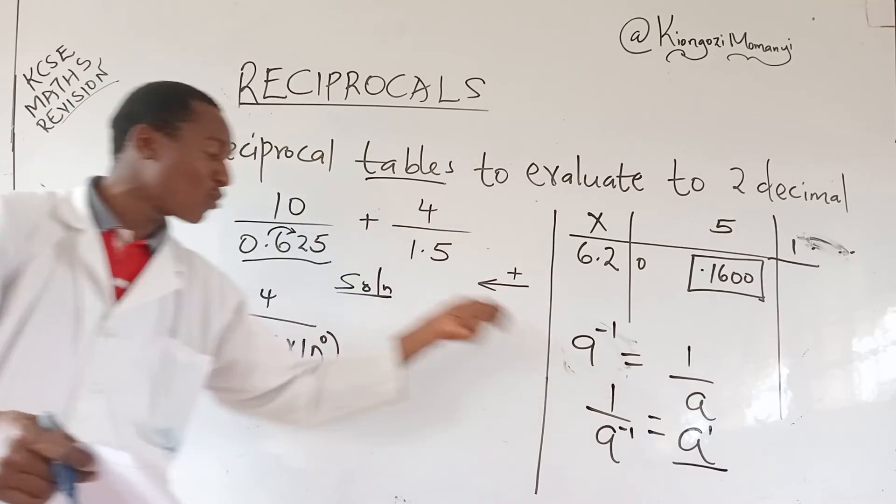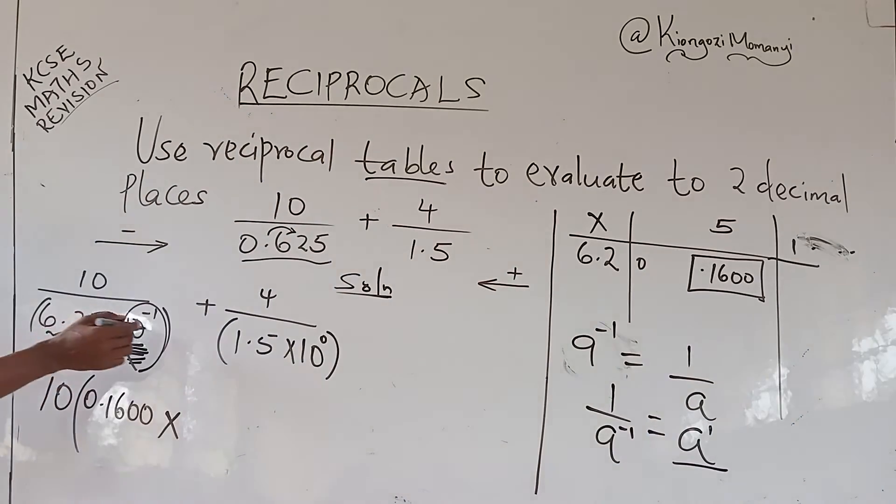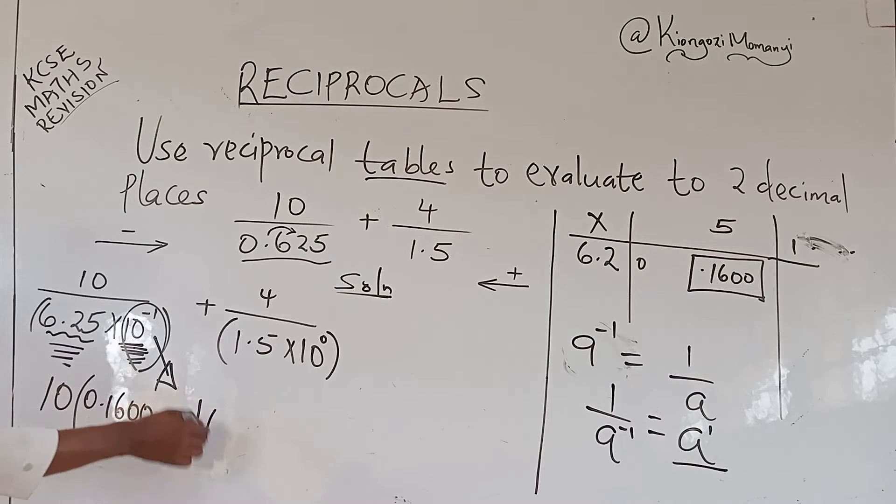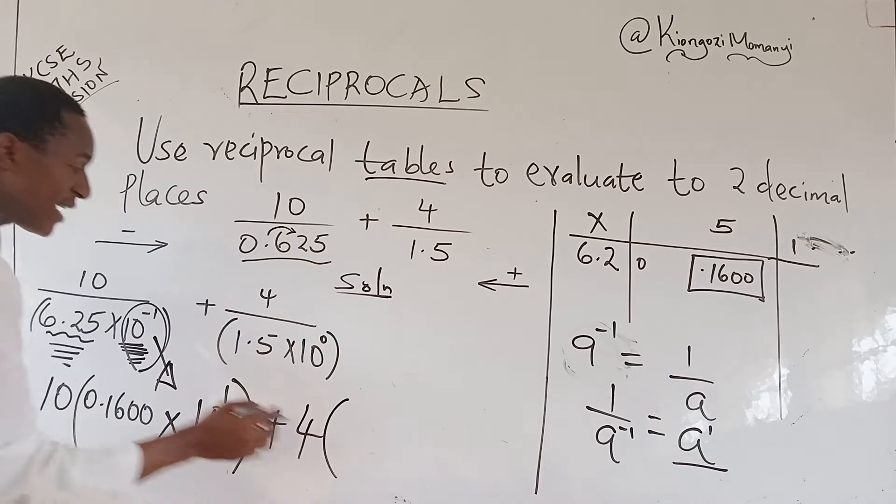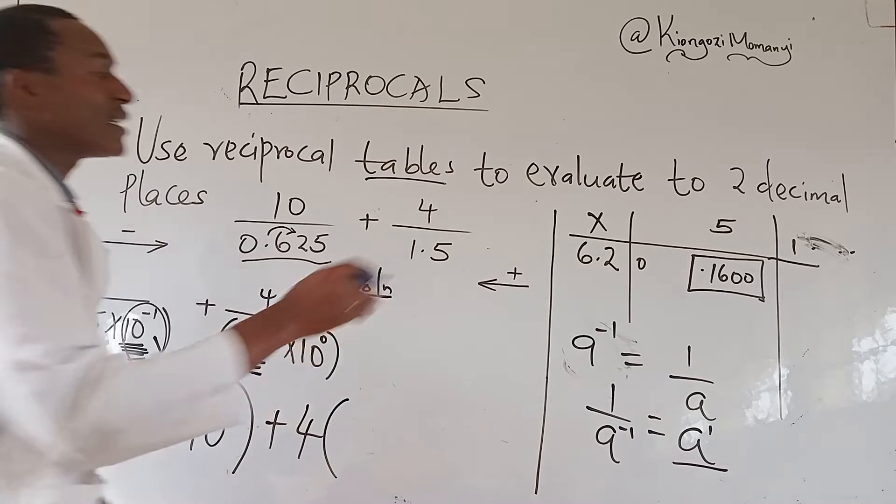If it is a negative, it is removed. If it is not there, it is introduced. So we apply that one. So this one, reciprocal goes to 10 power positive 1. Then we cross and then plus 4 multiplied by 1.5 from the reciprocal tables.